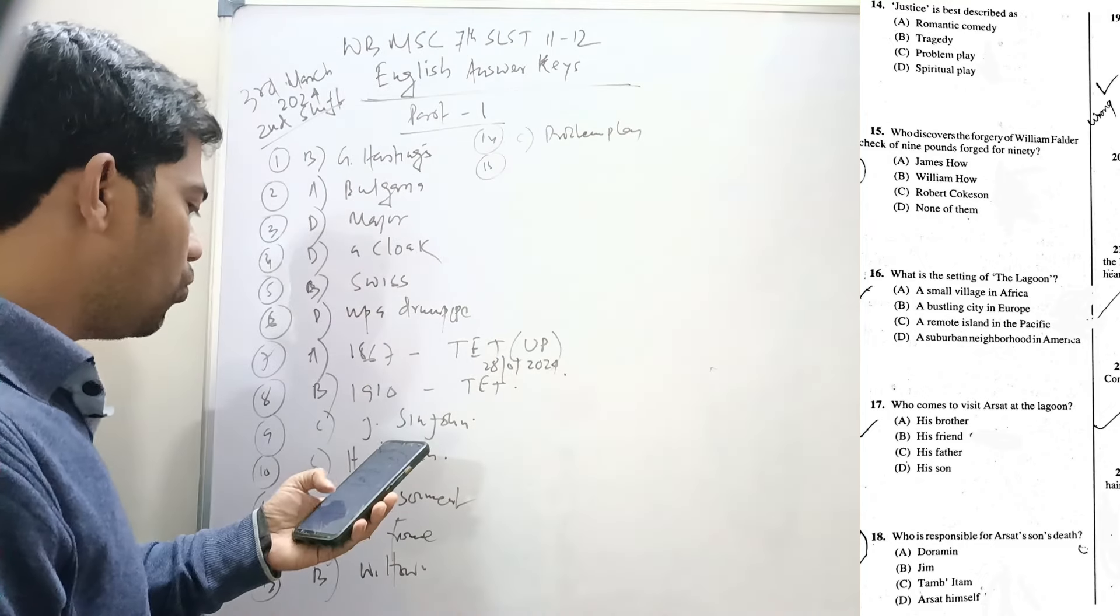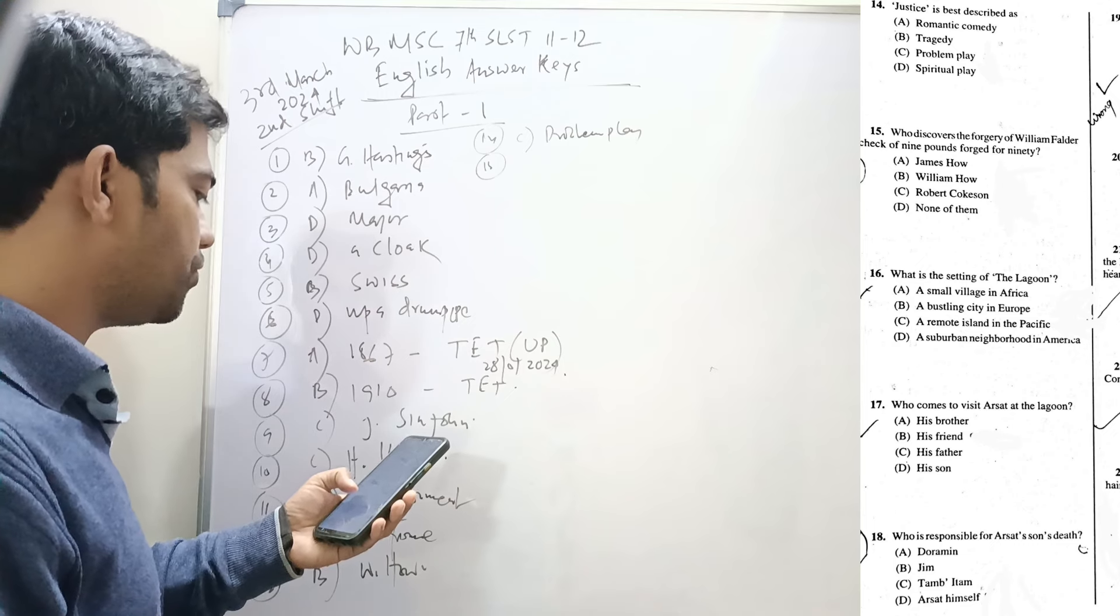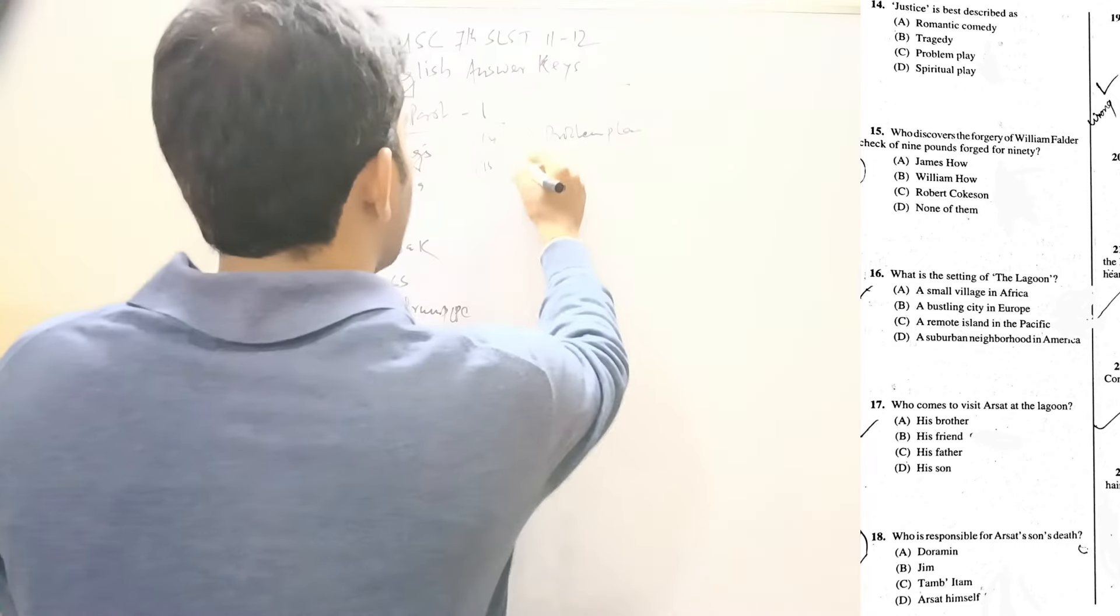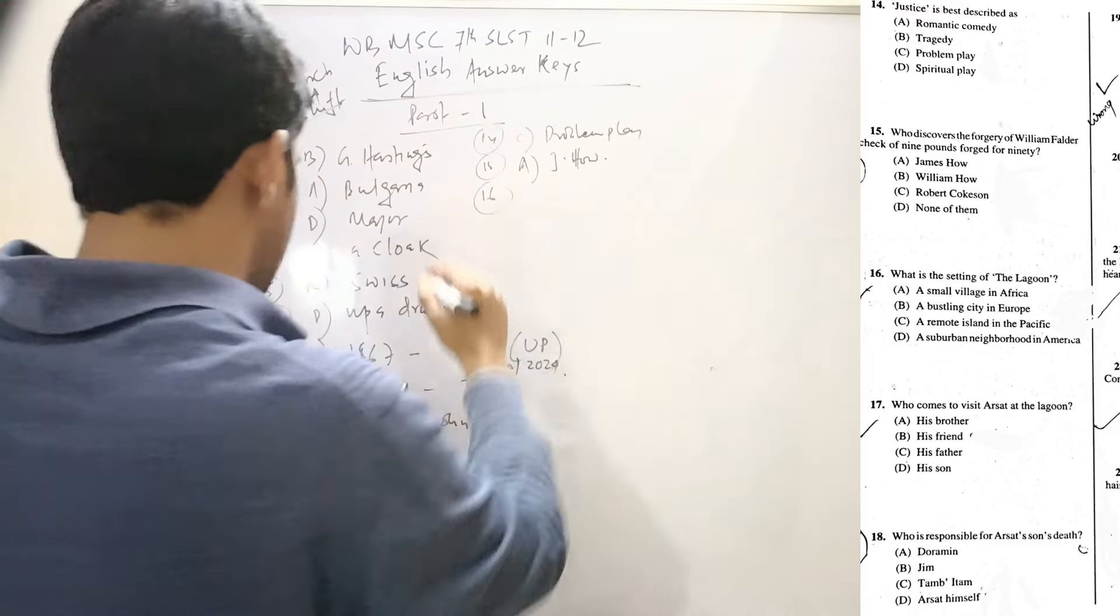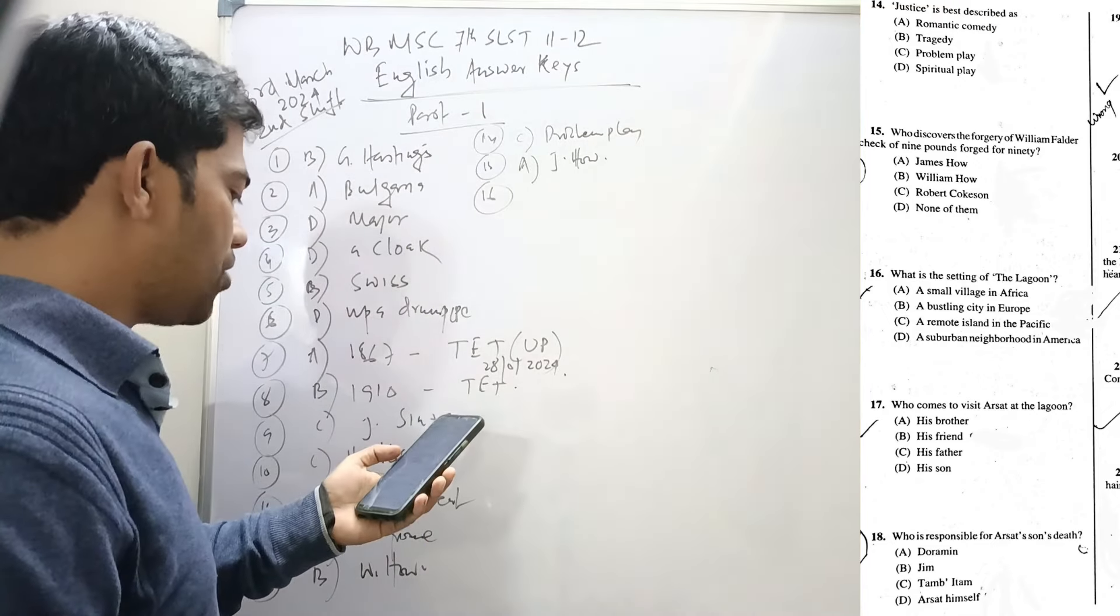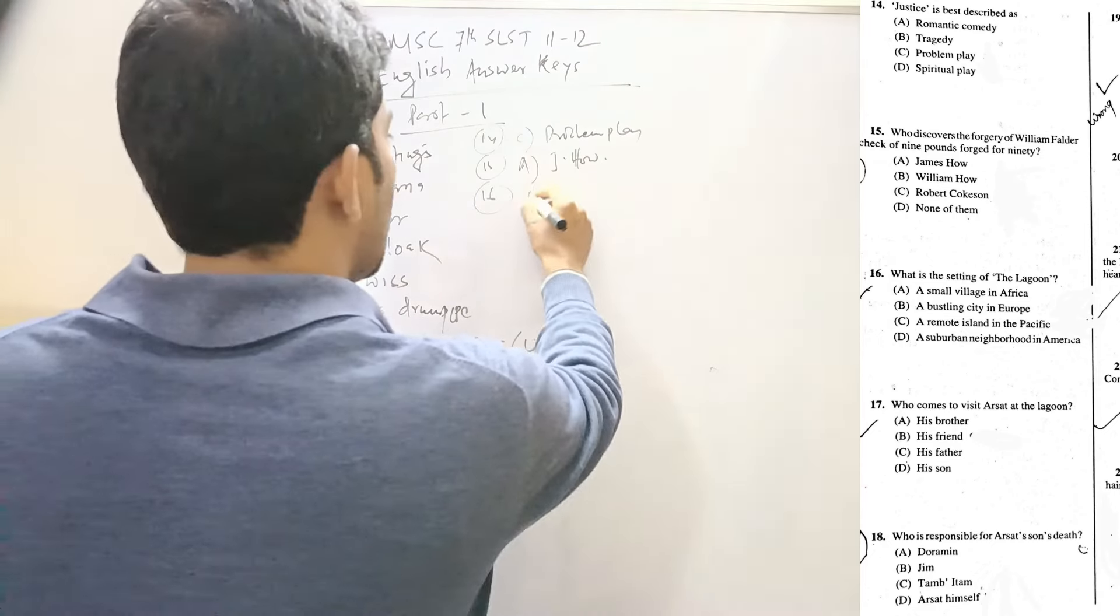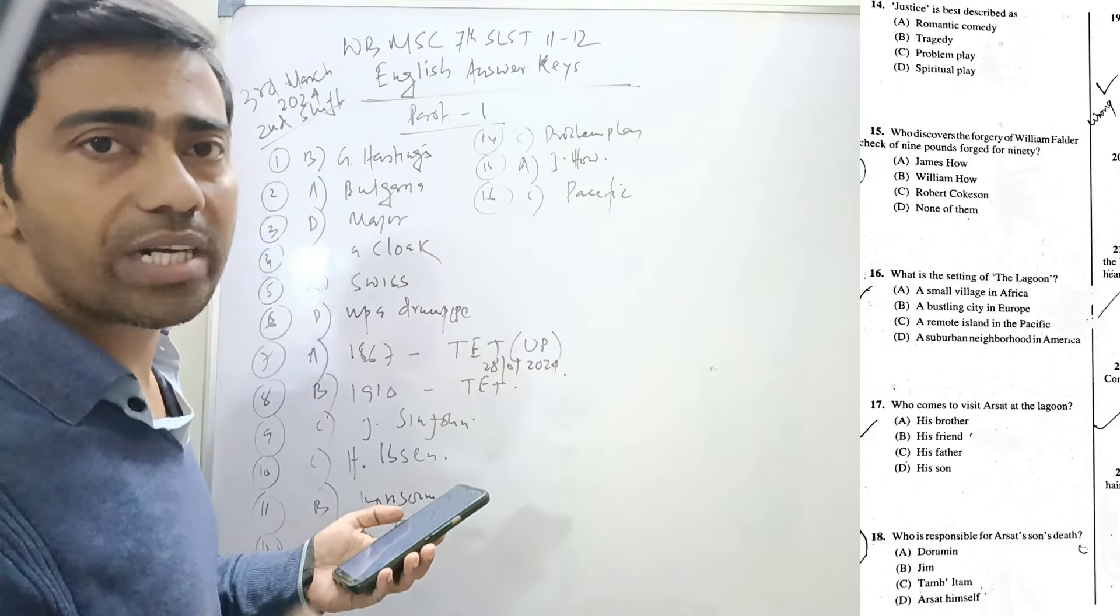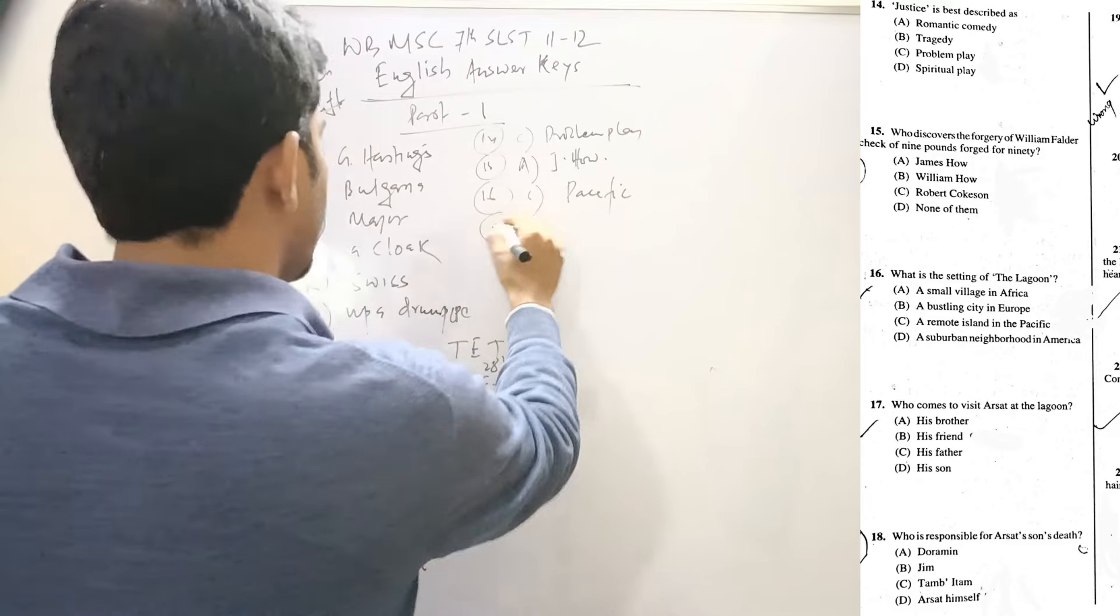Fifteen: Who discovers the forgery of William Falder's check of nine pounds forged for 90? It is James How, A. Sixteen: What is the setting of The Lagoon? The setting of the Lagoon is a Pacific Ocean remote island, the Malaya Peninsula. So Malaya Peninsula is located at the Pacific island. Seventeen: Who comes to visit Arsat at the lagoon? His friend Tuan.